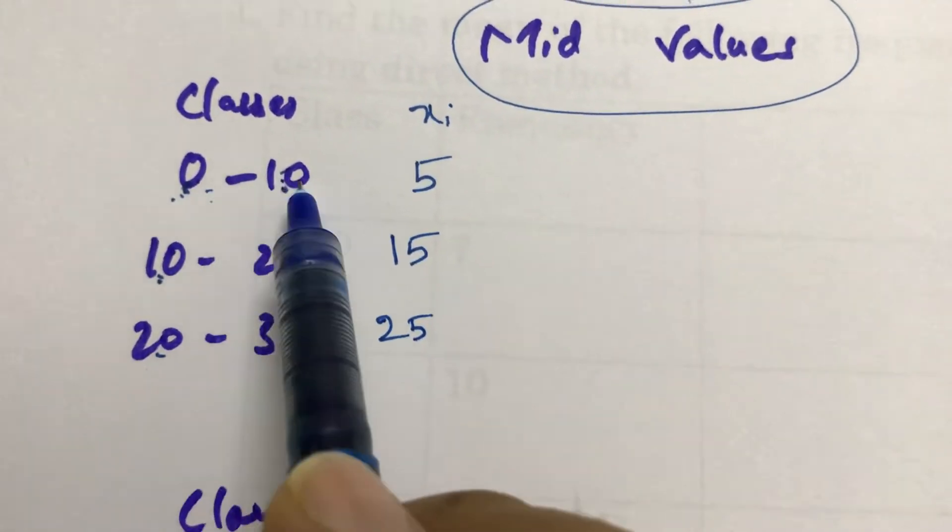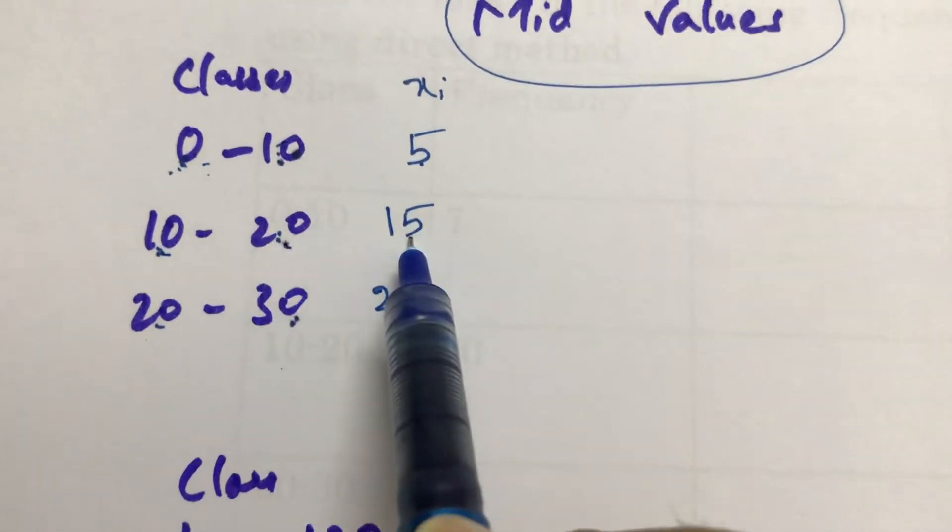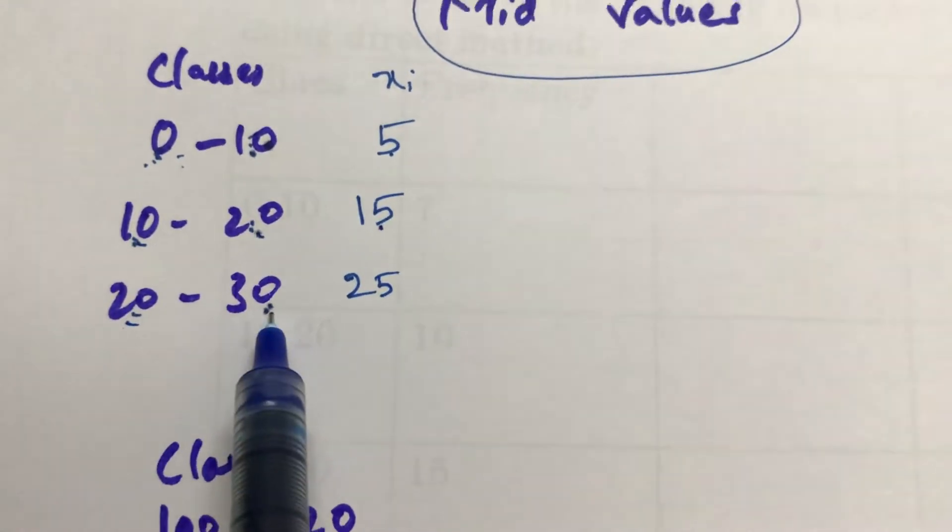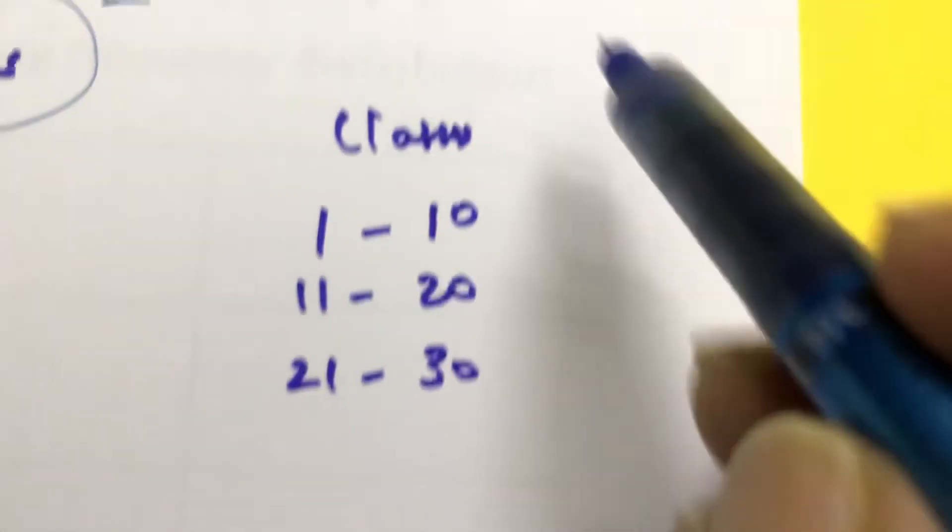See, we need to add 0 plus 10, that is 10. 10 by 2 is 5. 10 plus 20 is 30, 30 by 2 is 15. 20 plus 30 is 50, 50 by 2 is 25. Here also in the same way, class marks.